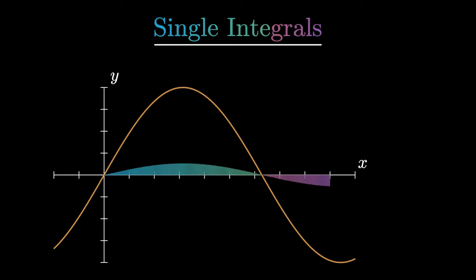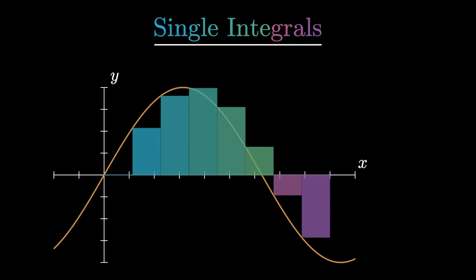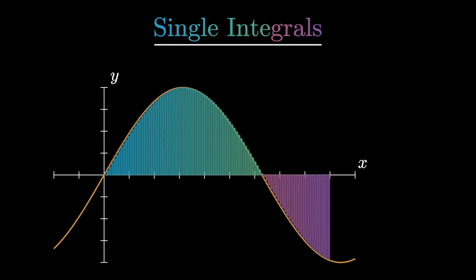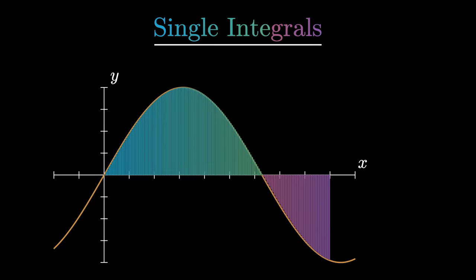Here, we begin by approximating the area with a bunch of rectangles between the input range and then crank up the number of rectangles within that input range to infinity to make our approximation increasingly better.